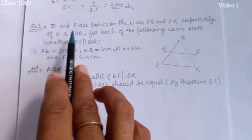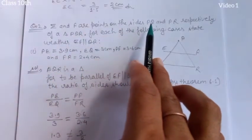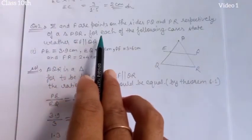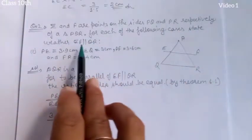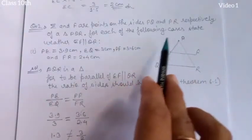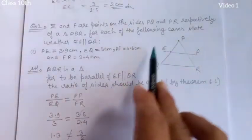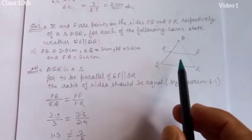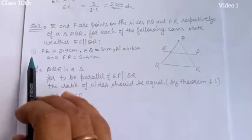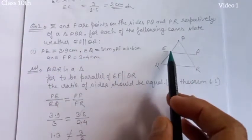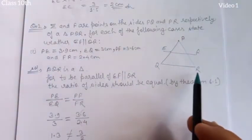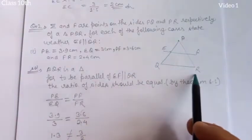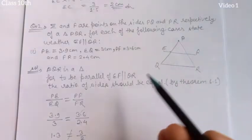Now question number 2. E and F are points on the sides PQ and PR respectively of triangle PQR. For each of the following cases, state whether EF is parallel to QR. In this triangle PQR, values of PE, EQ, PF, and FR are given. If the ratio PE/EQ equals PF/FR, then we can say EF is parallel to QR. Very easy — let's solve.